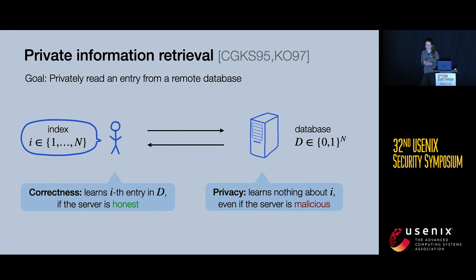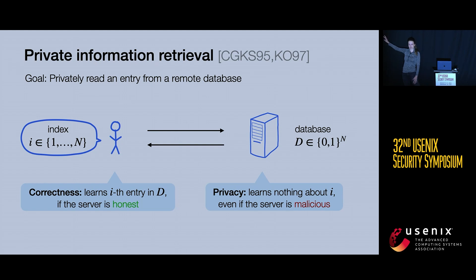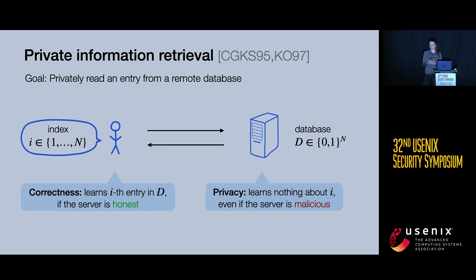As a quick refresher, in private information retrieval our goal is to let a user make private reads from a remote database. In this setting, a server holds a database modeled as an n-bit string. A user holds some index i between 1 and n. Following a PIR protocol, two properties hold: the user learns the ith bit of the database, and the server learns nothing — in a strong cryptographic sense — about the index i being read.